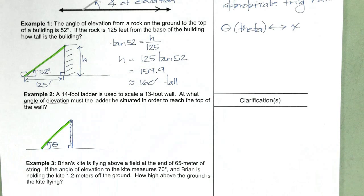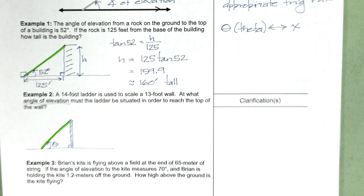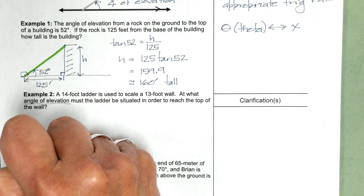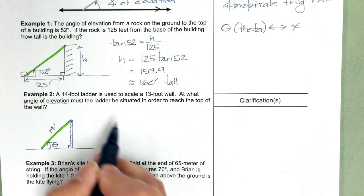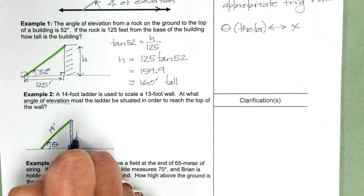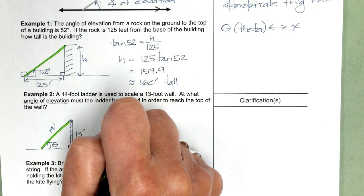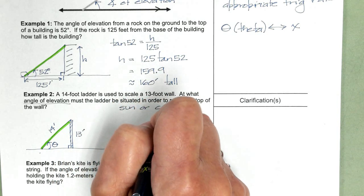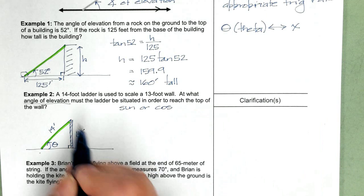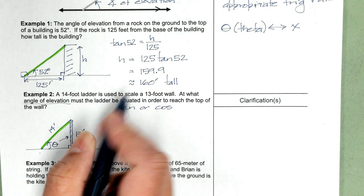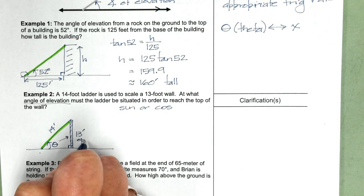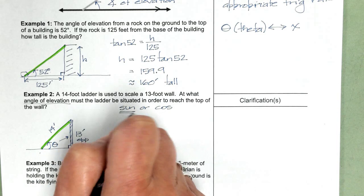Here's our hypotenuse, which happens to be the ladder. Since we have information about the hypotenuse, again, sine or cosine. We know the length of the opposite side, so that means we're going to use sine.